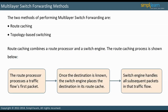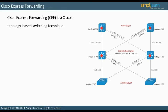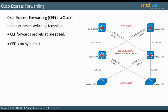Let us look at Cisco Express Forwarding, Cisco's topology-based switching, and how it works. Cisco Express Forwarding, or CEF, is the second method of multi-layer switch forwarding. CEF forwards packets at line speed, with some exceptions. CEF is on by default, and Cisco recommends that you do not disable it.